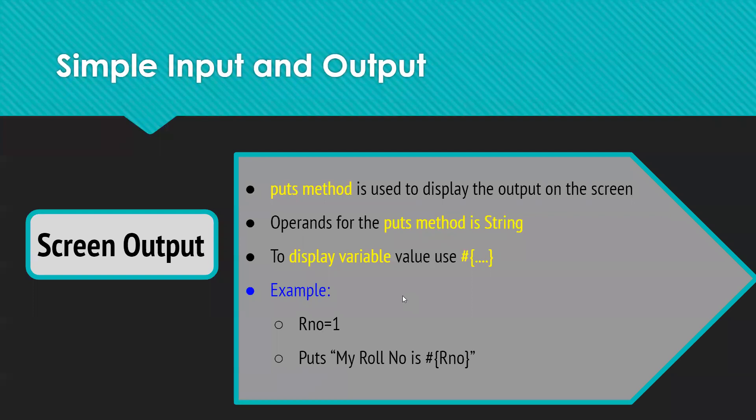Now, variable can have any kind of value like array, or string, or integer. So any kind of variable, you can just put the value by using this hash and curly bracket symbol.